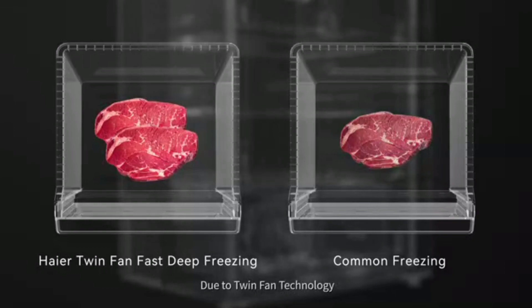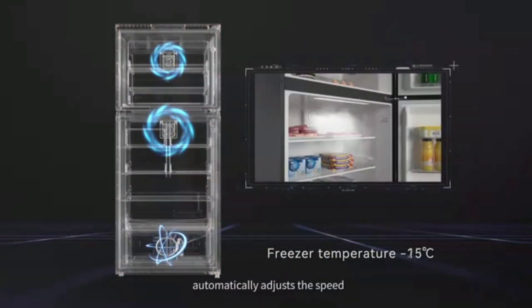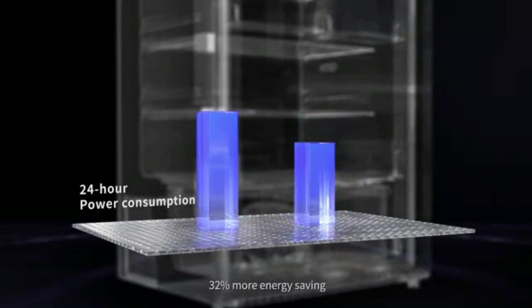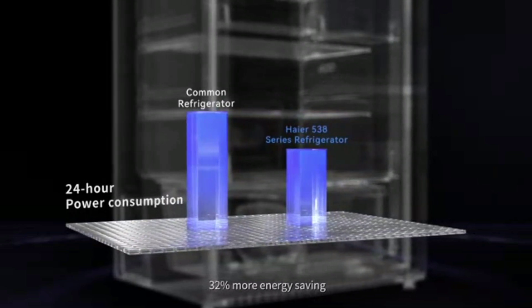Twin Inverter Technology automatically adjusts the speed. It consumes one unit one day only, with 32% more energy saving.